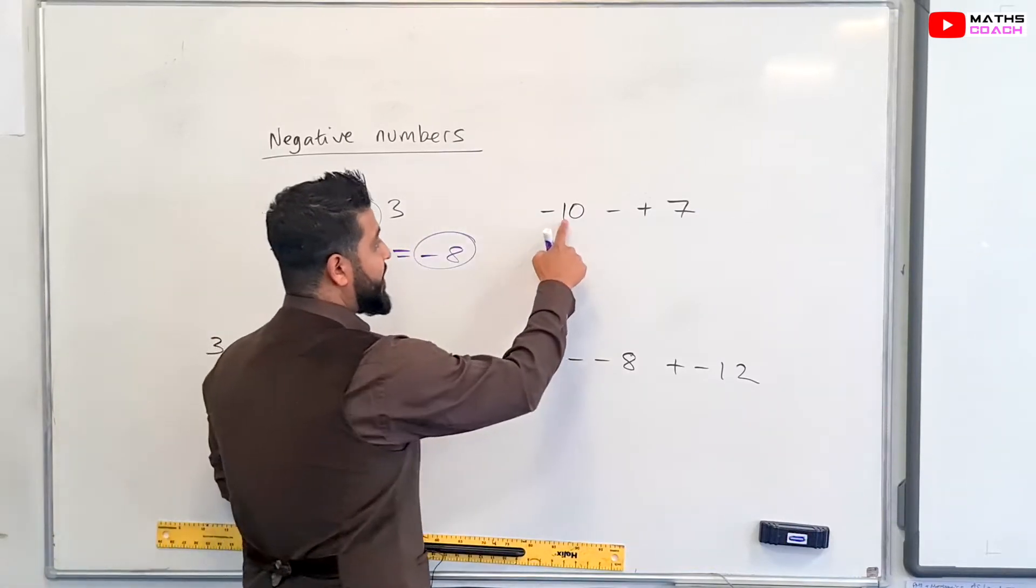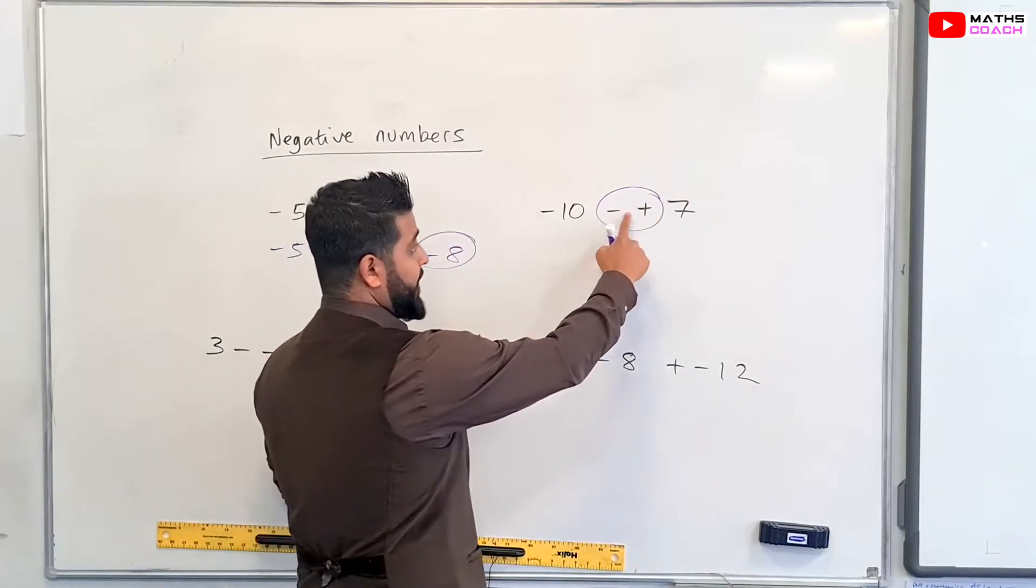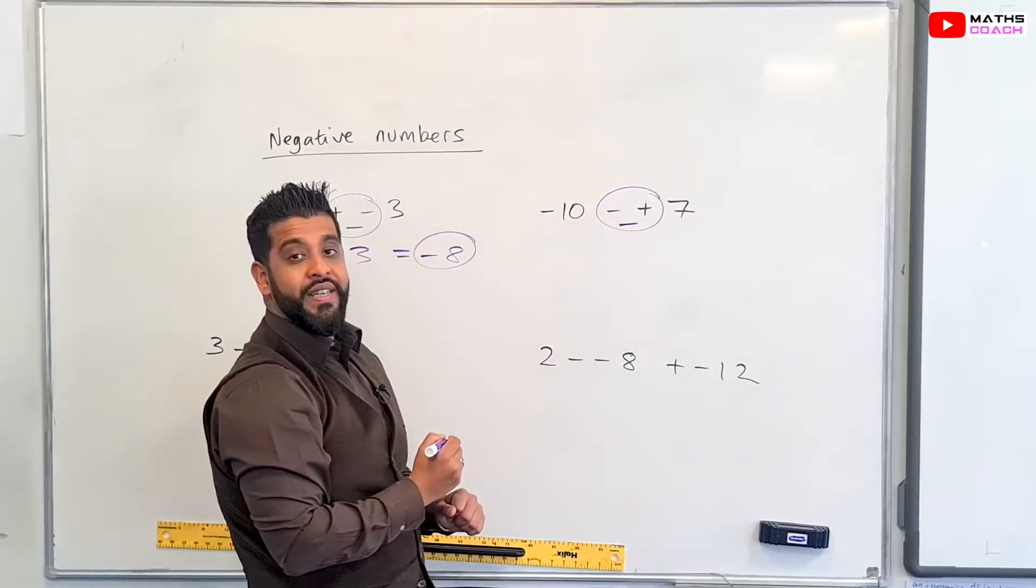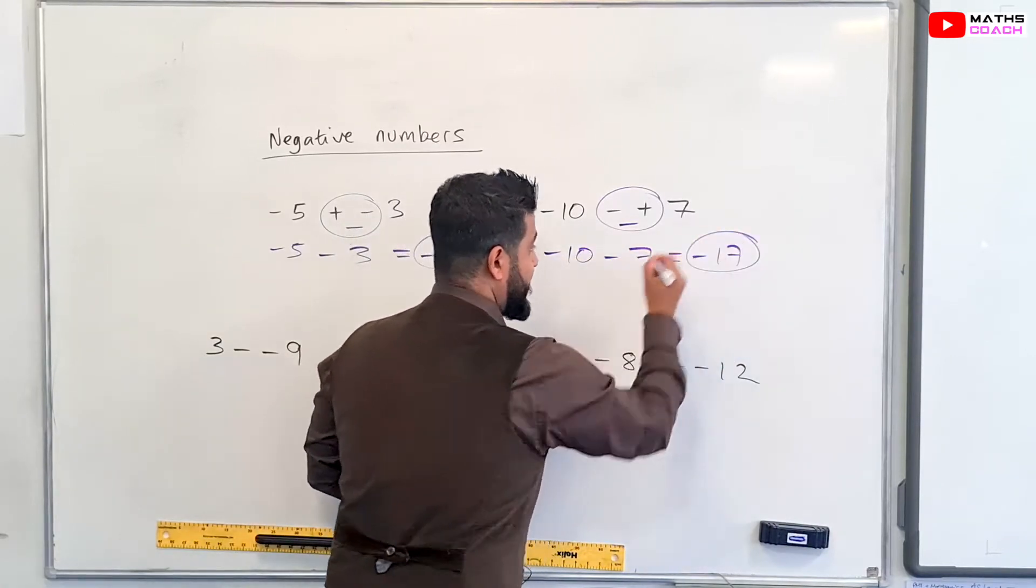Let's move on to the next one. We've got minus 10 minus plus seven. So once again, minus and a plus next to each other, the negative is dominant. So you end up with minus 10 minus seven, which is equal to minus 17.